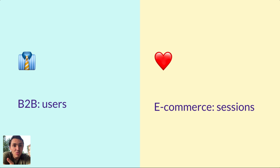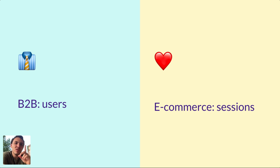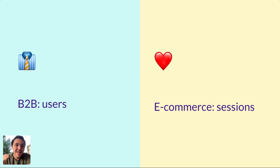In B2B — for instance, at Porter Metrics, a provider for Google Looker Studio connectors — people can only become customers once. They only have one subscription, so they can only convert once. That means I will use users, because a user has only the potential to convert once on my website. In e-commerce, it is different. If you go to Amazon today, you can buy a book, and tomorrow you can buy clothes or an iPhone. Every session has the potential to drive a conversion, so for e-commerce I will calculate the conversion rate with sessions.